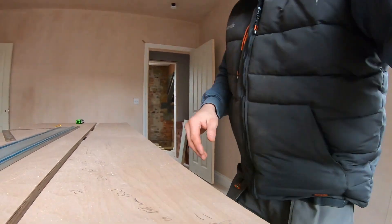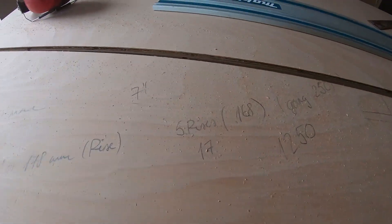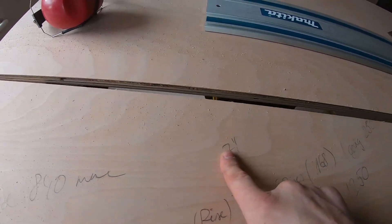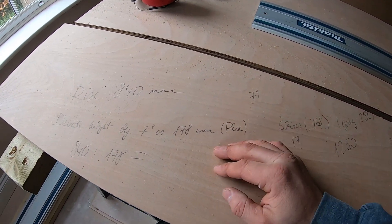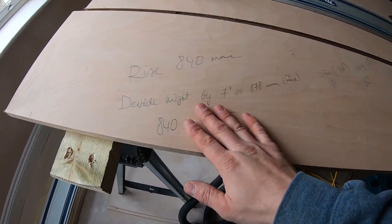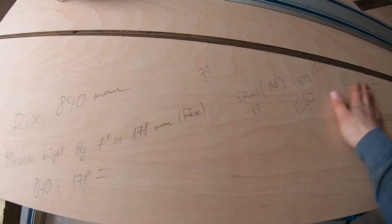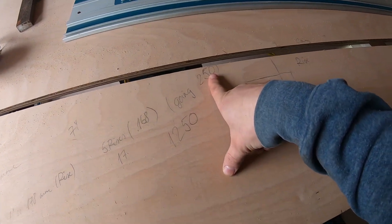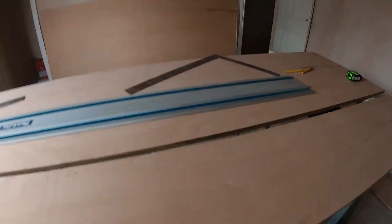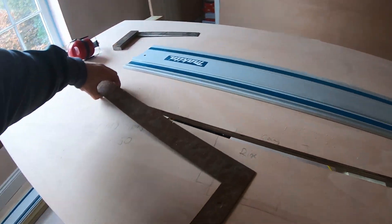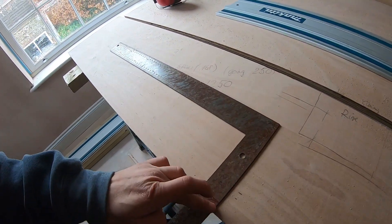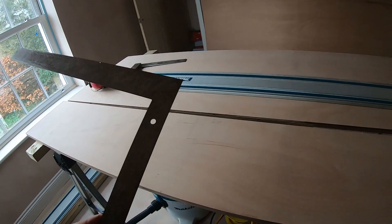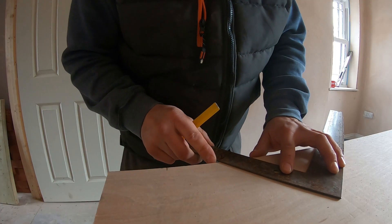So one more time: you get your rise, which is roughly 7 inches, but then you work out what your actual height is. In our case, five rises. Going will be 250. So you have a roofing square where you mark it on — 168 and 250.